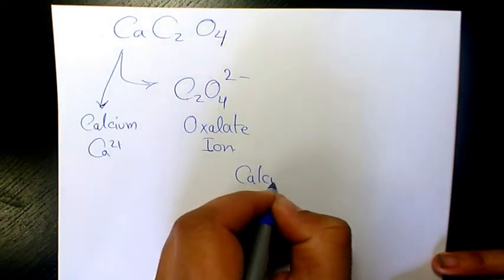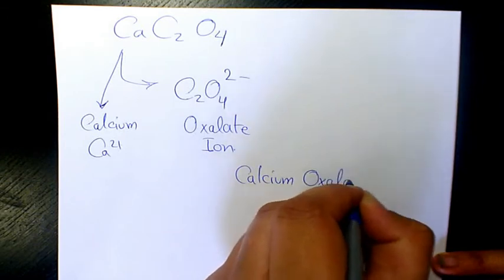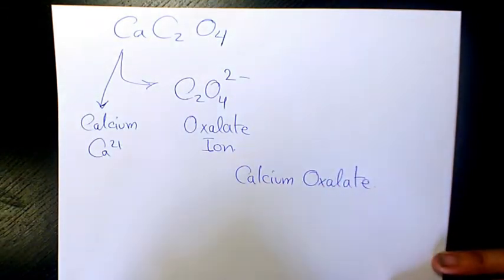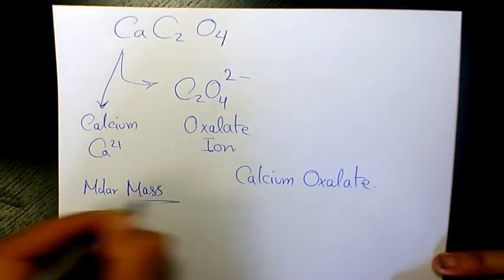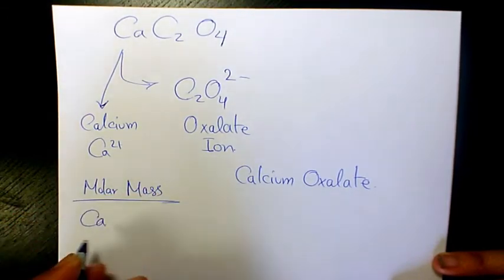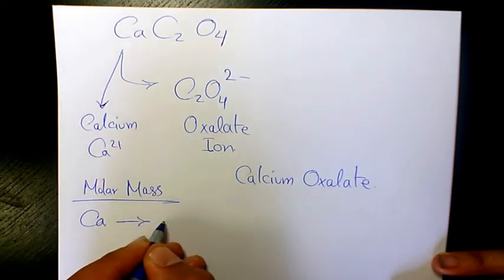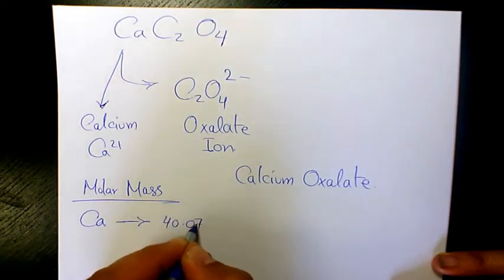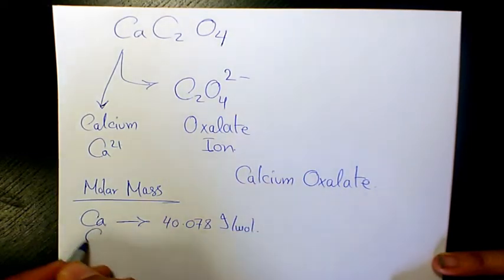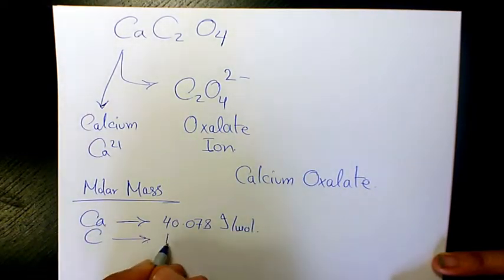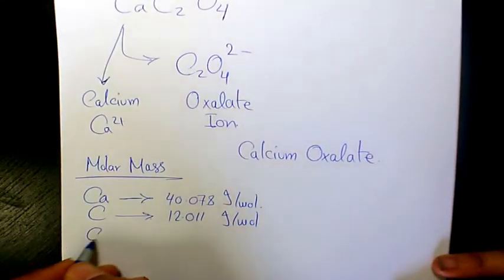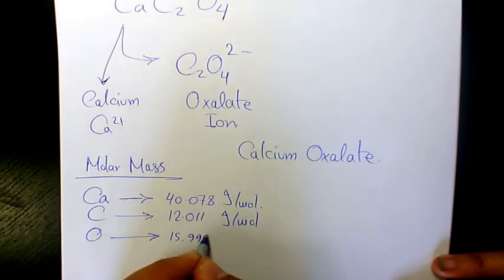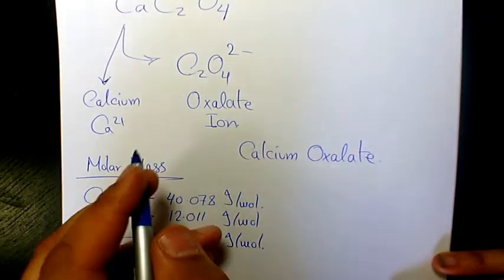Now, how to find out the molar mass. Molar mass is going to be the atomic mass of calcium. Using the periodic table we can find it is 40.078 grams per mole. Atomic mass of carbon is 12.011 grams per mole. Oxygen is 15.999 grams per mole.